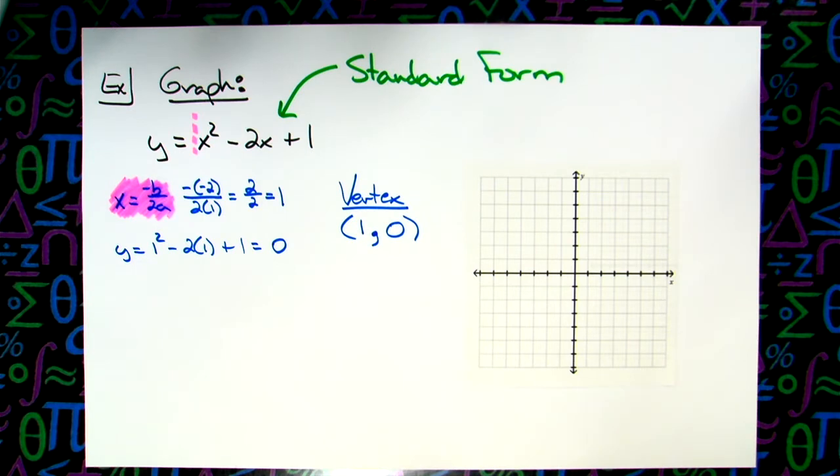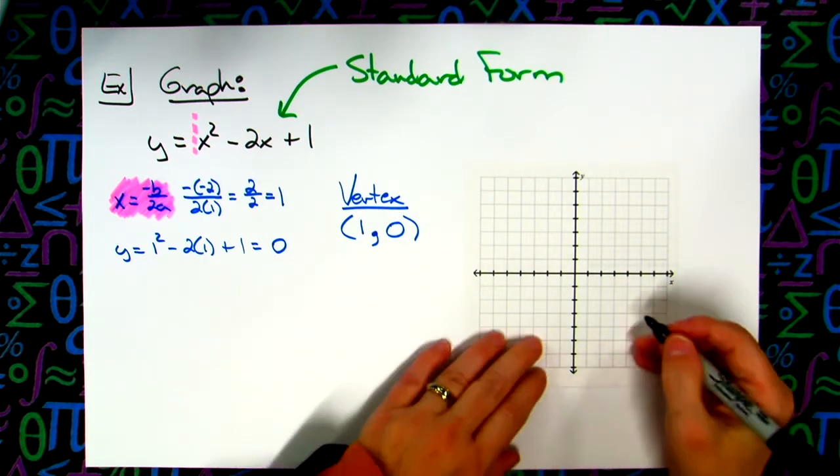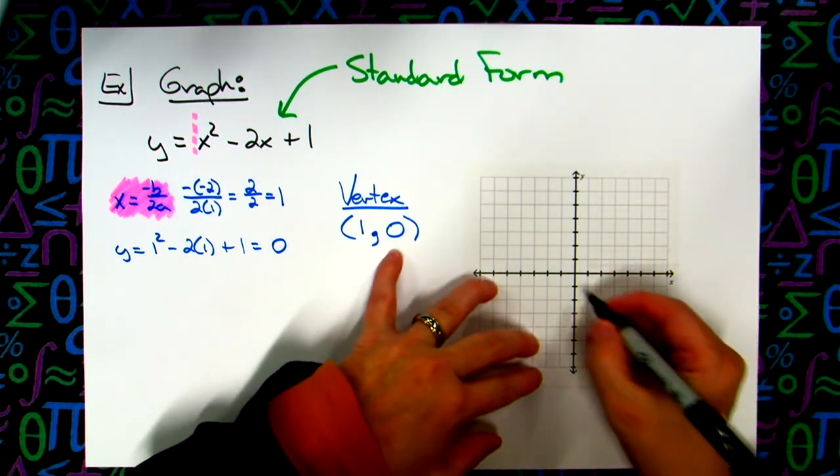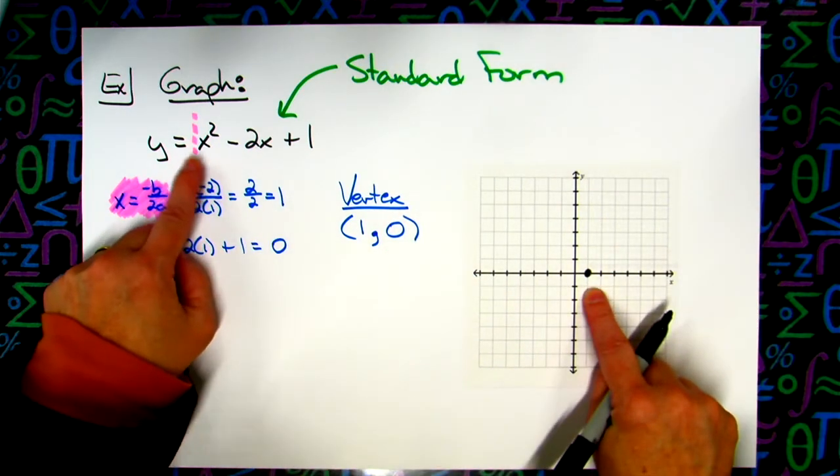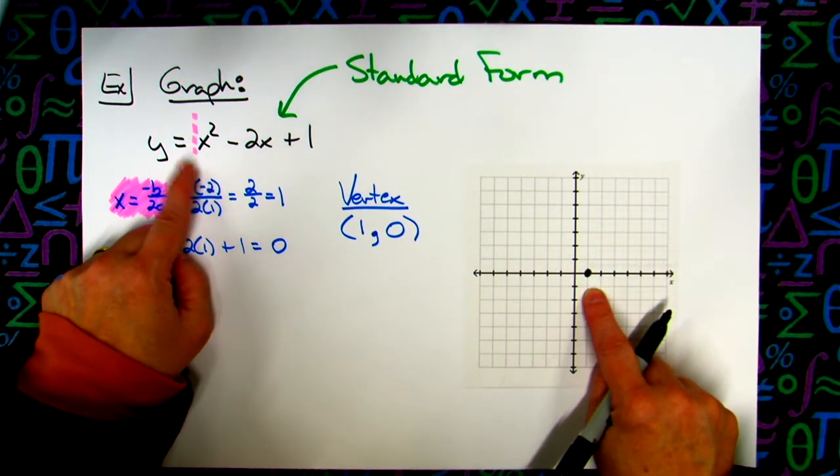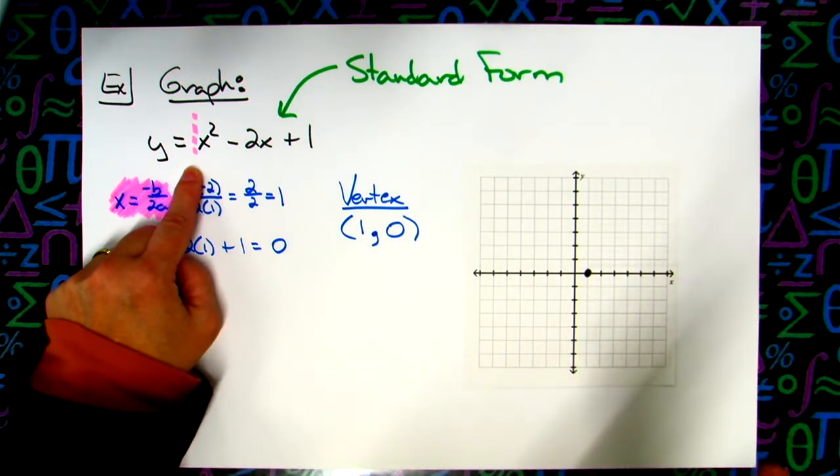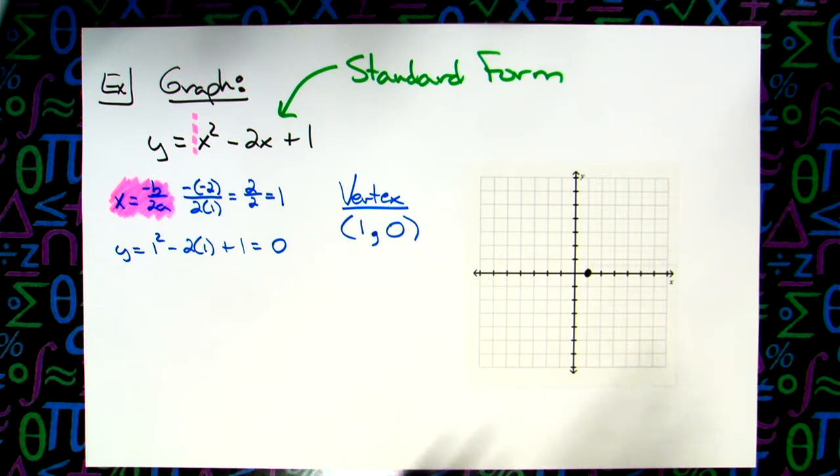Now that I know my vertex, I can come over here to my graph, and I can put a dot at 1, 0 for my vertex. We've already looked at this leading coefficient, and it's a positive, so it's upright. So we just, we know we're going up.